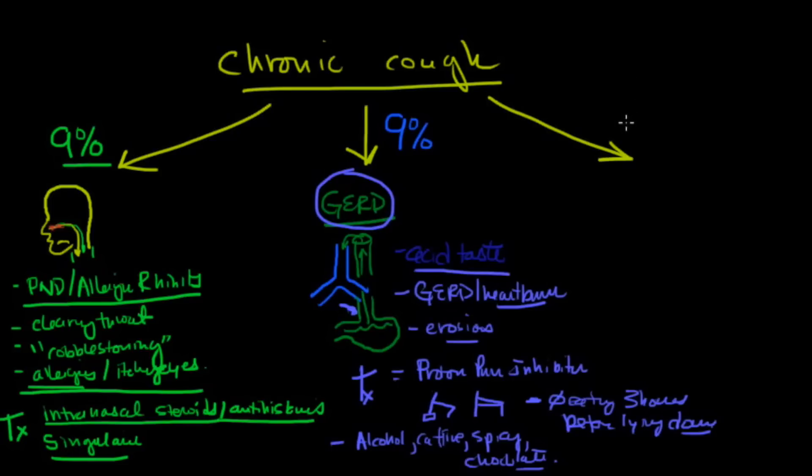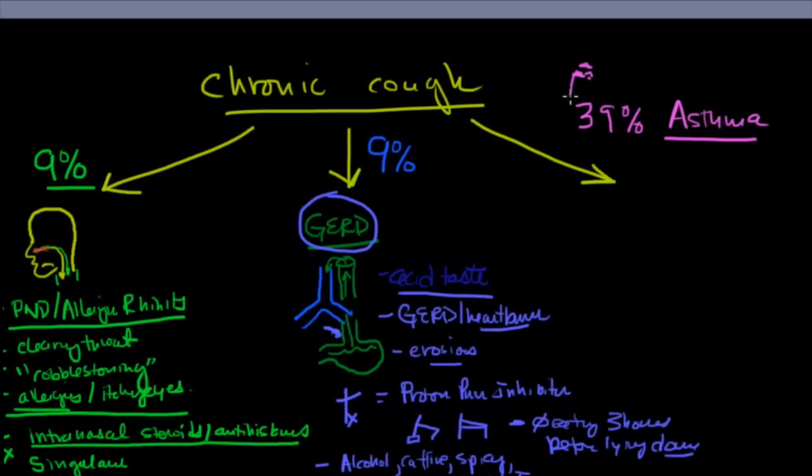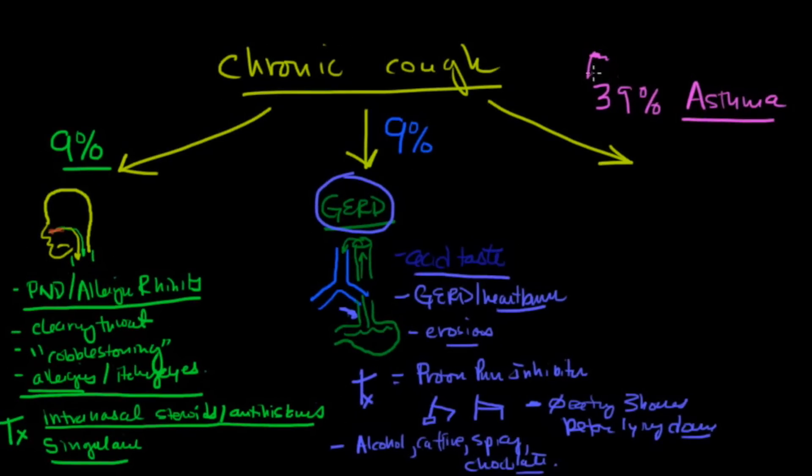The last one is probably the most common. This is about 39%. So this is probably the majority. And that's asthma. So they don't wheeze. They just cough. Or maybe they do wheeze. But they don't have to. But just coughing could be a symptom of asthma. And that alone might do it.